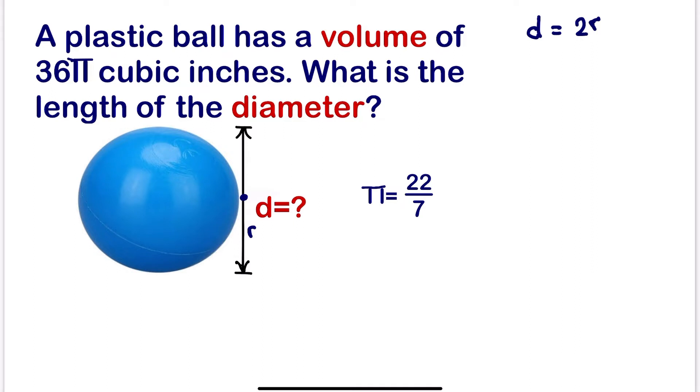We have been given the volume, so we can use the formula of volume. The formula of volume of a sphere is V = (4/3)πr³. We can calculate the radius first, then later we can calculate the diameter.